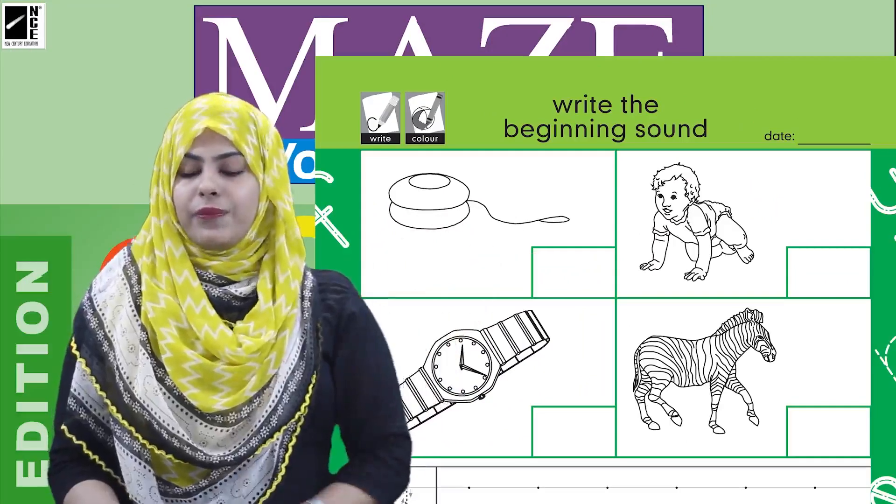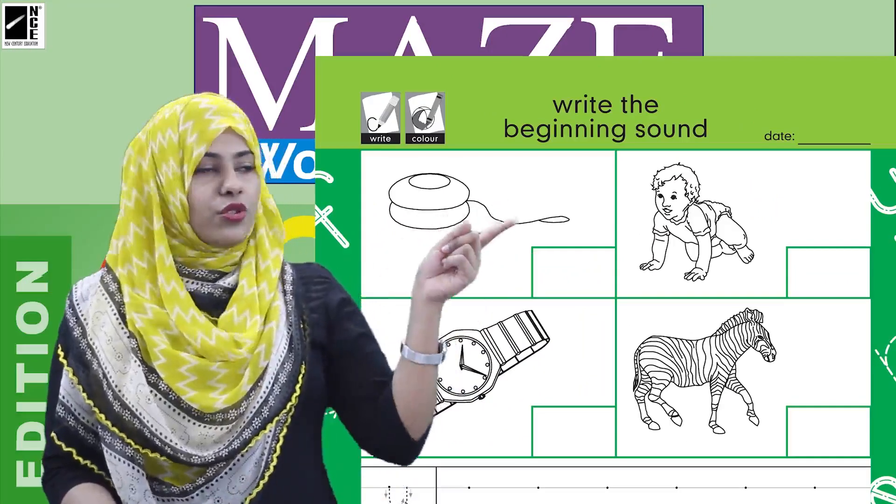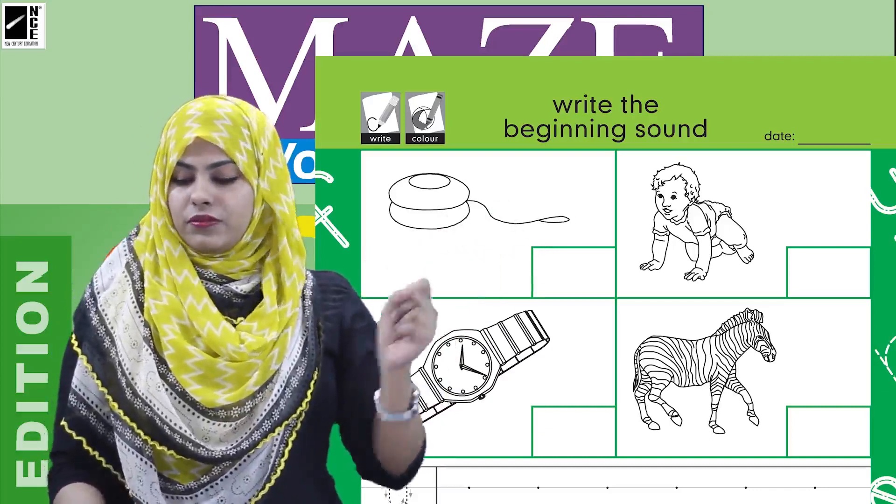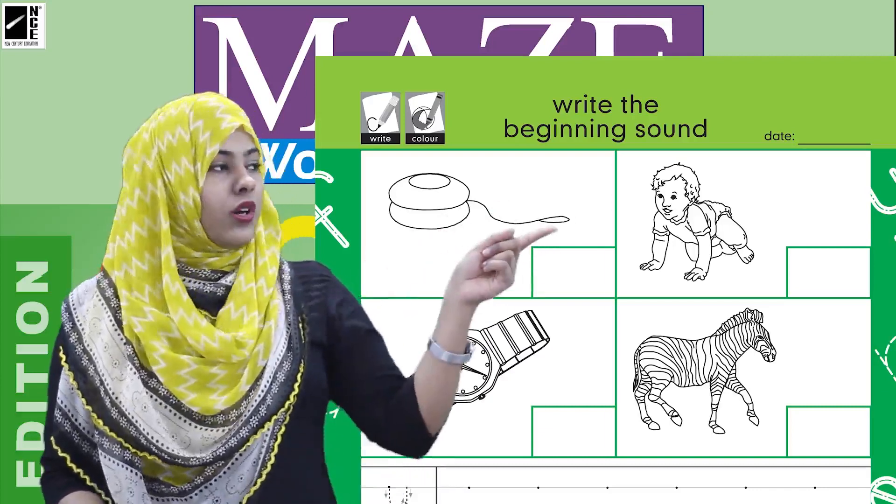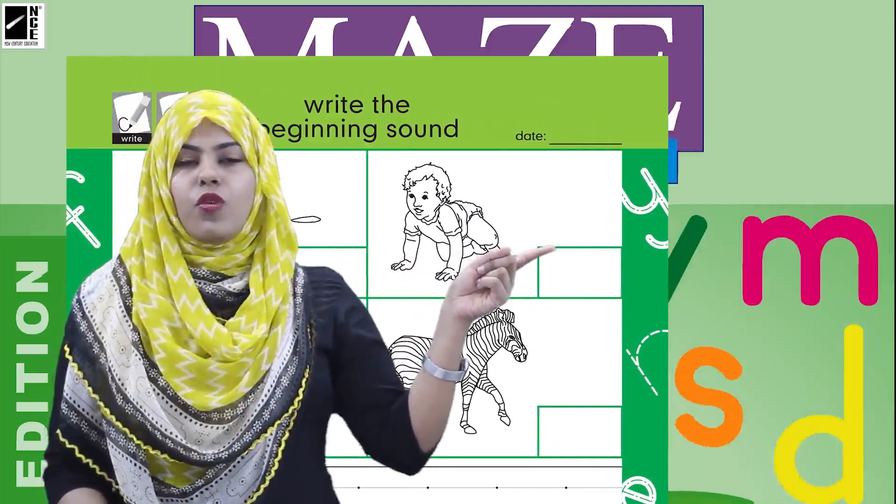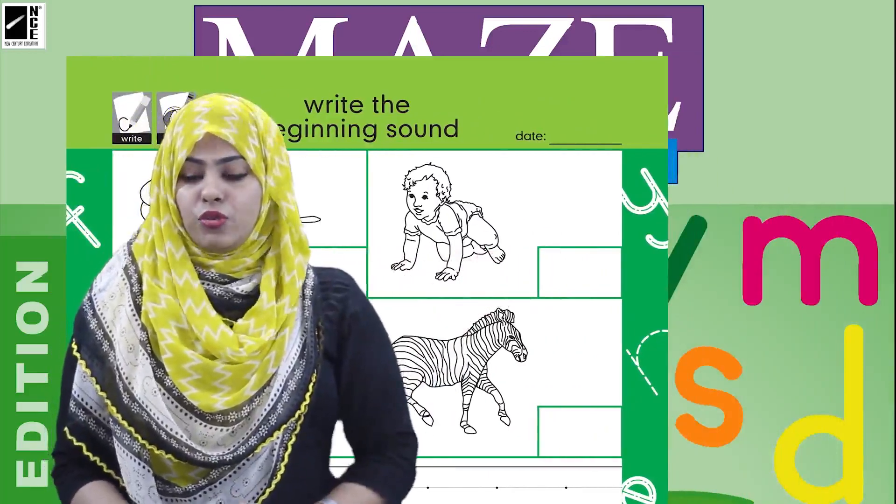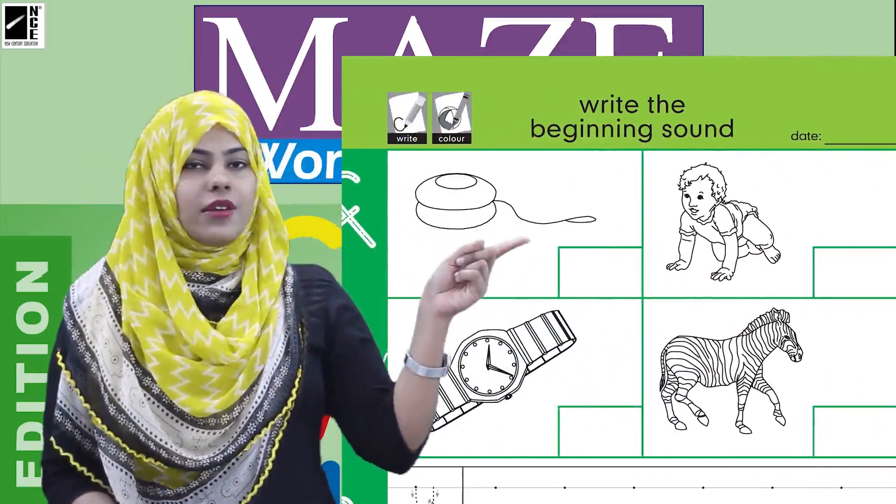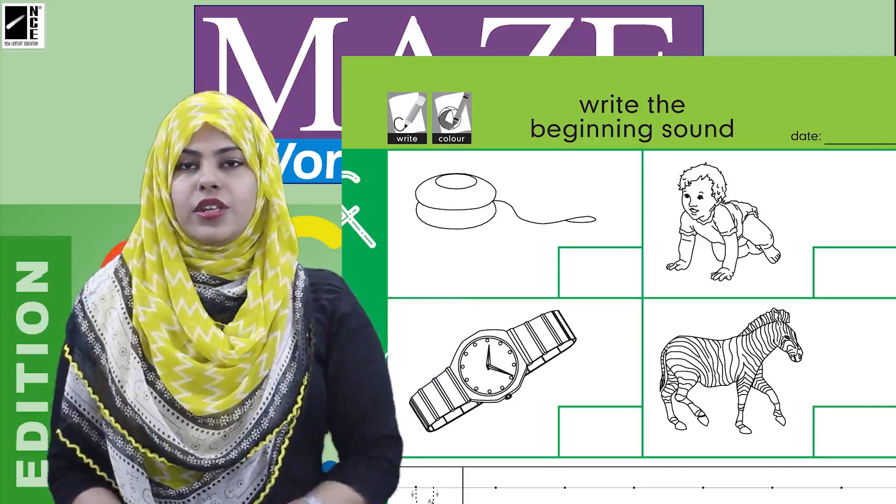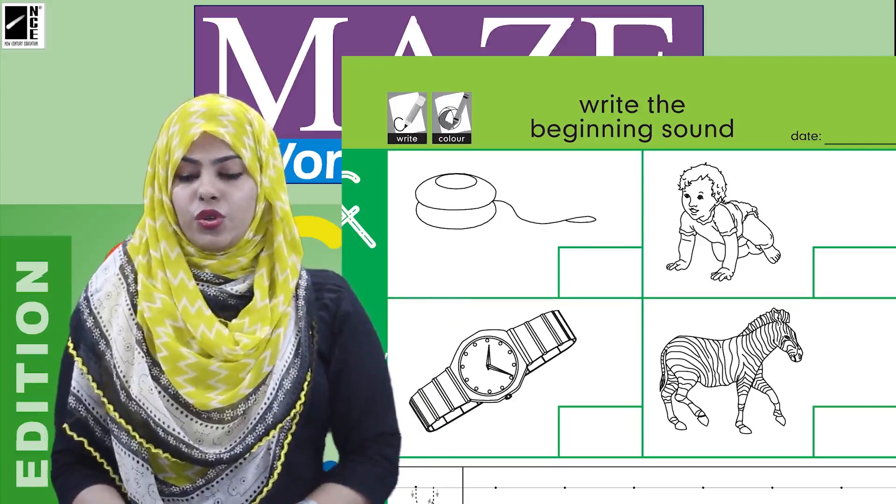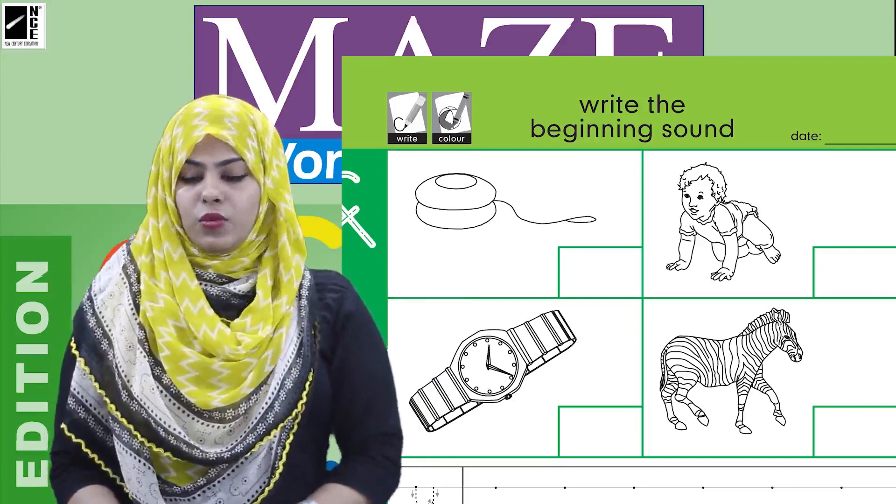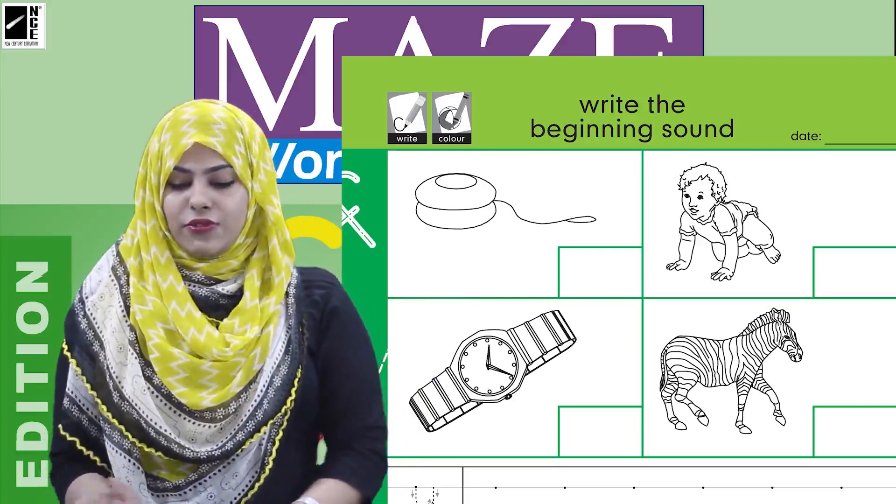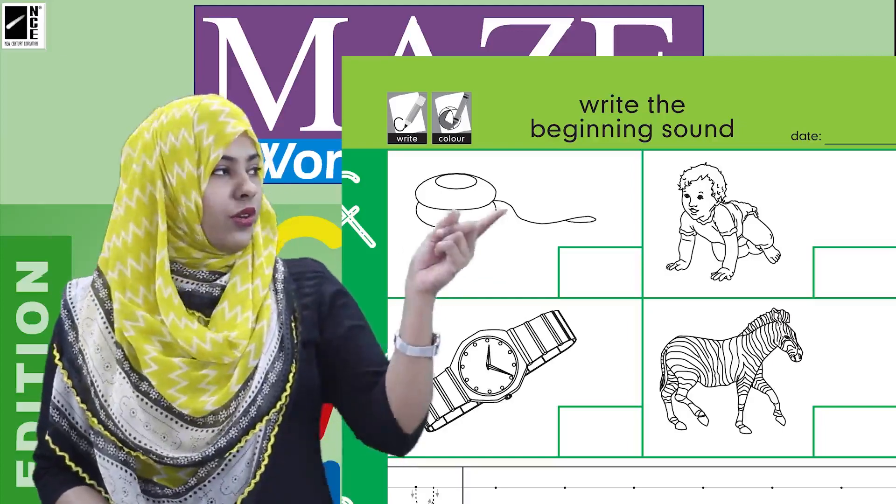For example, we are going to write 'y' below yo-yo and 'w' below watch. That means whichever picture has a beginning sound, we have to write that beginning sound in the blank below it. So easy! Which is 'y' for yo-yo, 'i' for infant, 'w' for watch, 'z' for zebra. This is going to be very easy for you. Okay, now look